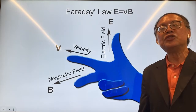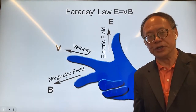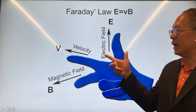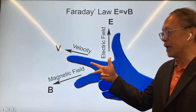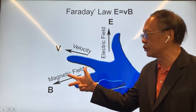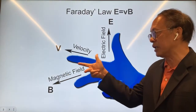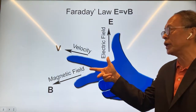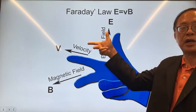How do we generate electricity from motion? We use Faraday's right-hand rule, for which if you have a magnetic field pointed in this direction, and you're moving against the magnetic field in this direction, then you would experience an electric field in this direction.